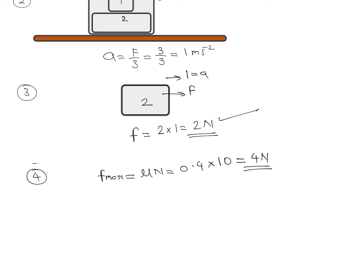So the final answers: acceleration of block 1 = 1 m/s², acceleration of block 2 = 1 m/s², and the frictional force between the blocks = 2 N.